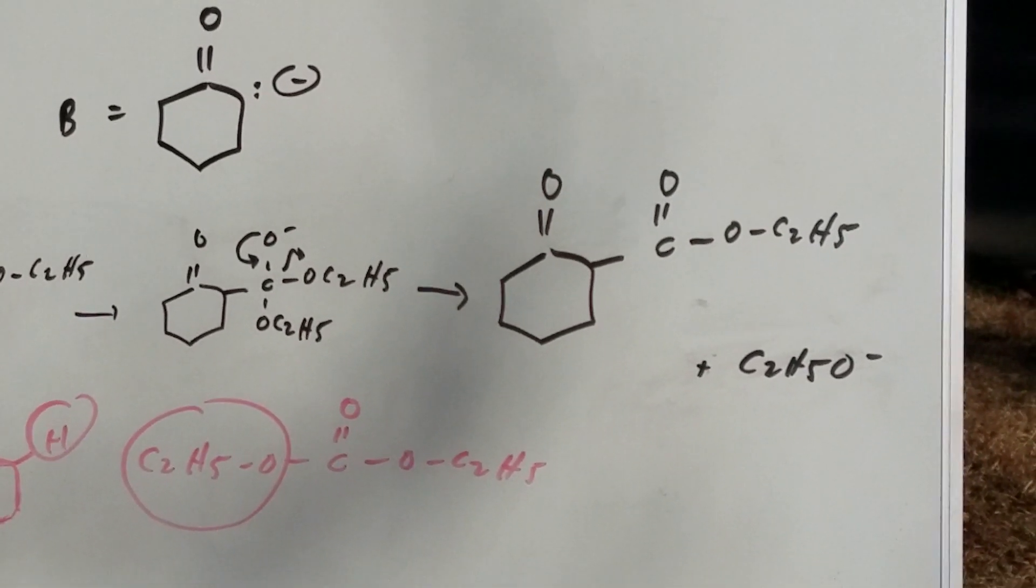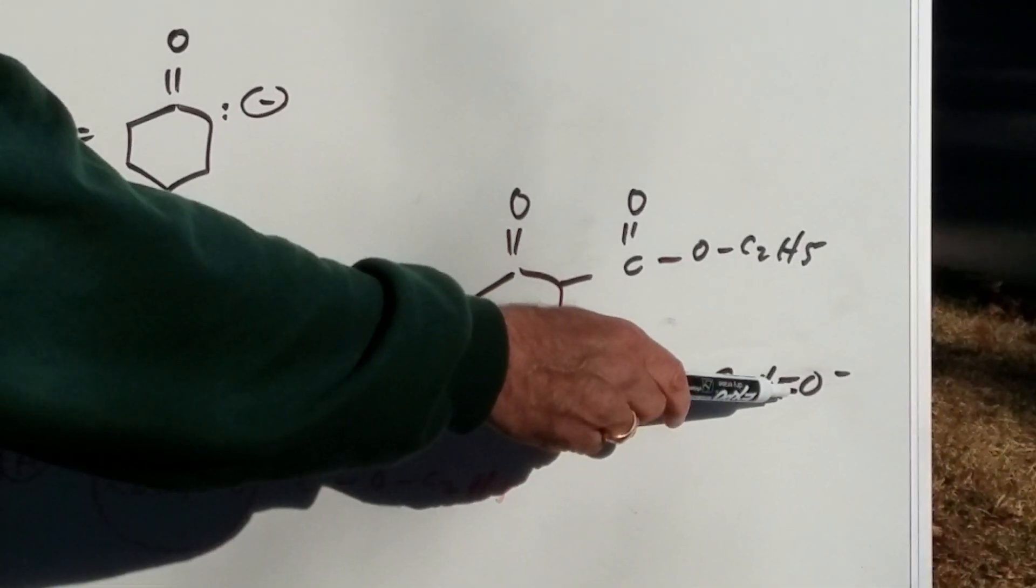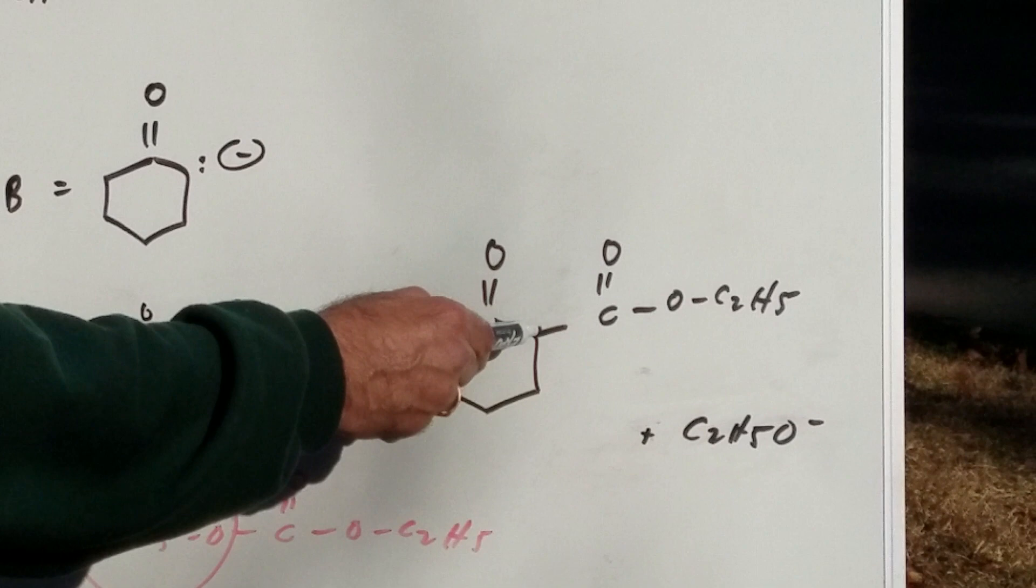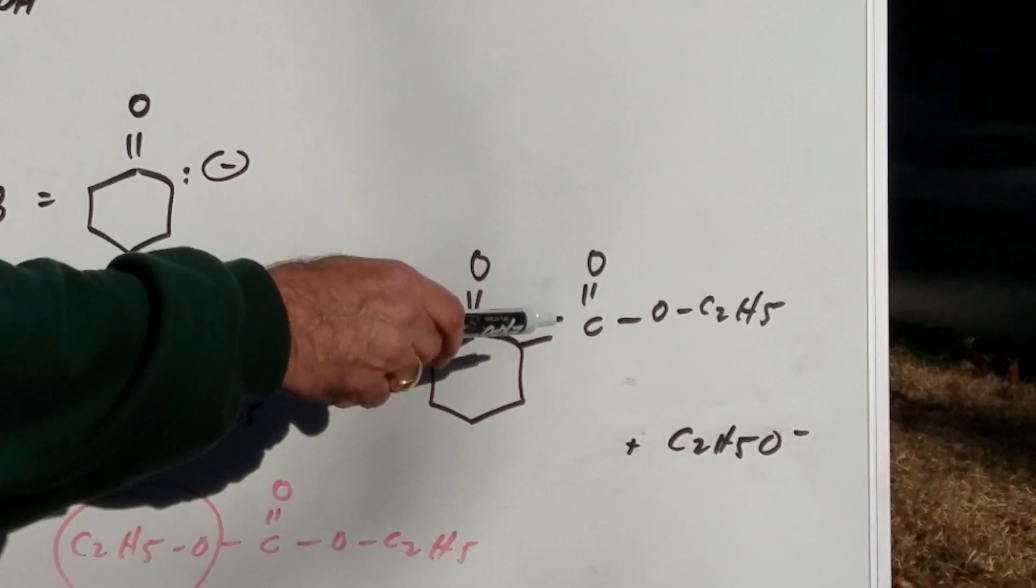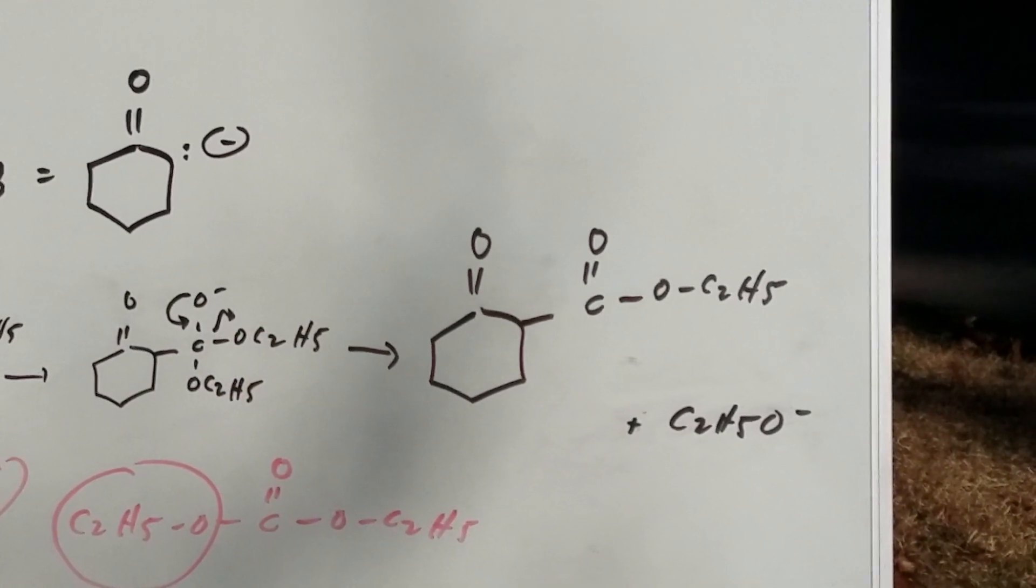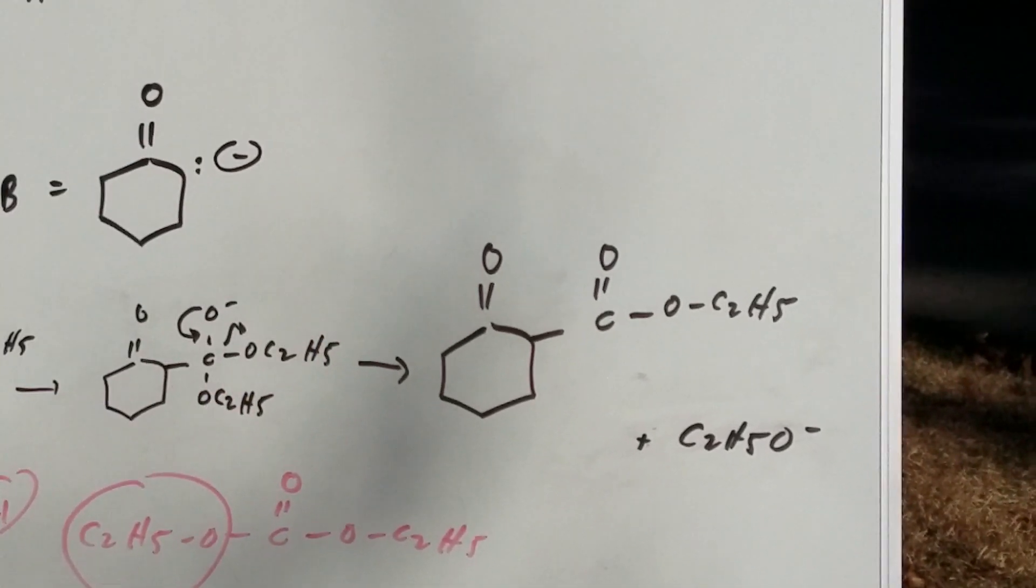For the kids that are really good in mechanisms, what would happen now is you would come back, you would remove off the double alpha proton, reprotonate, but you get the same answer. So we're not going to be too concerned with that. This is the final answer.